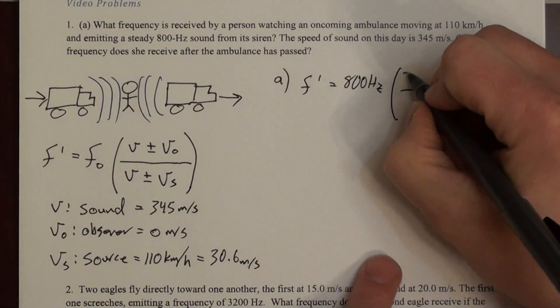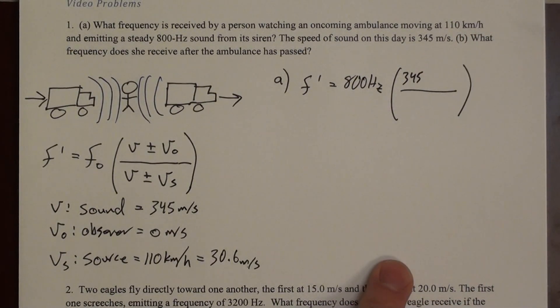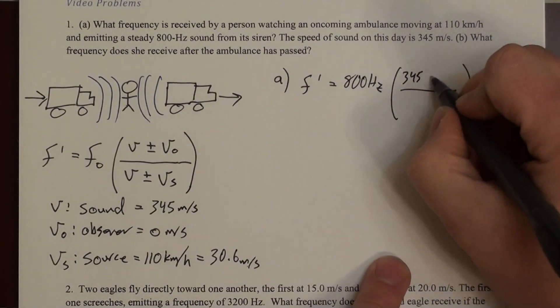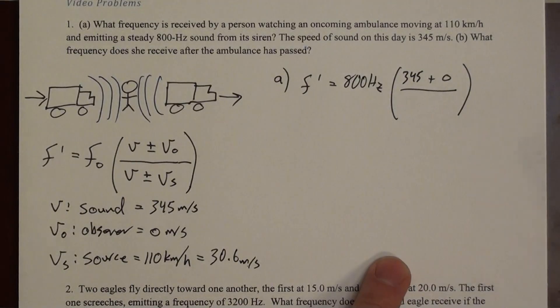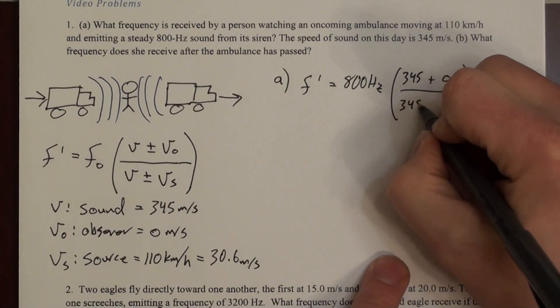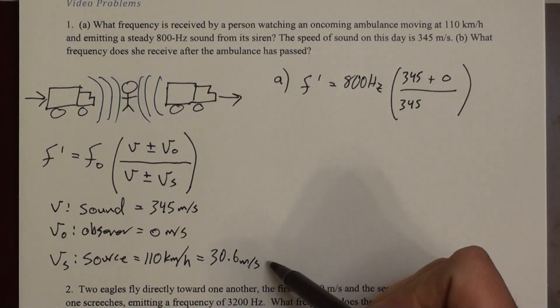So v, that's 345 meters per second, plus or minus the speed of the observer. Well, the speed of the observer is 0, so we'll just add 0, but it doesn't matter. If you subtract 0, it doesn't change it. In the denominator, we have 345 meters per second. And then we need to add or subtract this 30.6 meters per second.